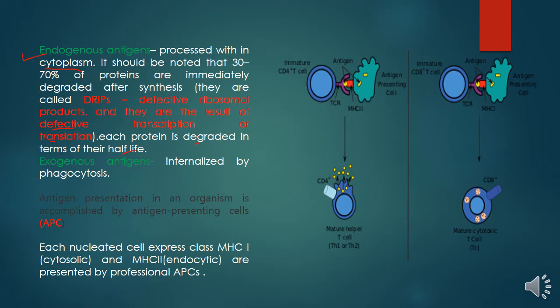The second type is exogenous antigens, which are internalized by phagocytosis. Here I will cover only endogenous antigens. Antigen presentation in an organism is accomplished by antigen presenting cells — all cells which present antigen on their surface bound with MHC complex are called antigen presenting cells.